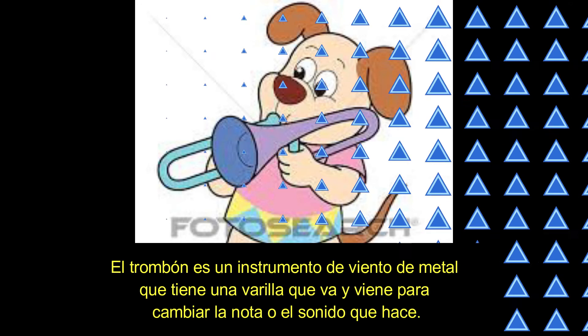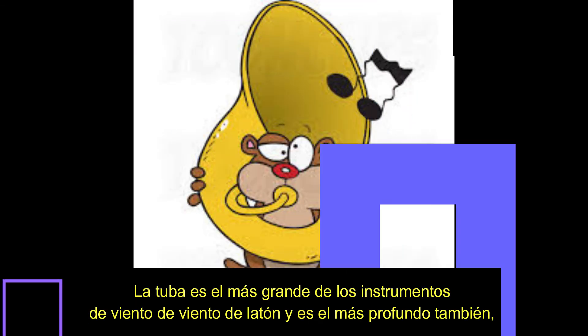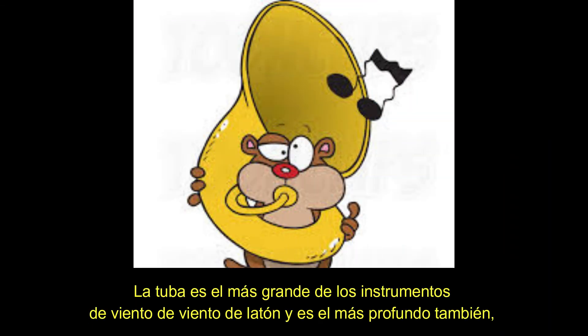The trombone is a brass wind instrument. It has a rod that goes back and forth to change the note or the sound it makes. Then we have the tuba. The tuba is the biggest of the brass wind instruments and it is the deepest as well.